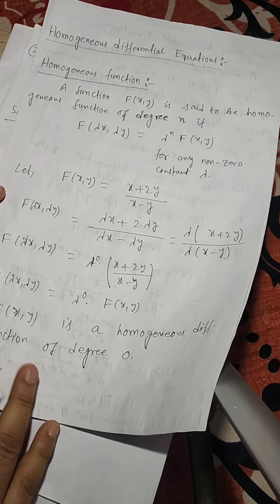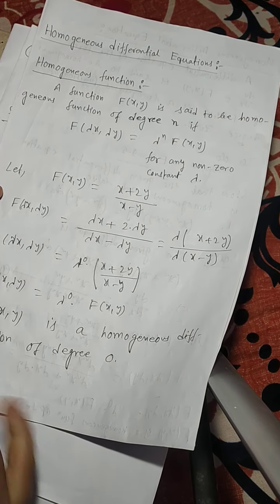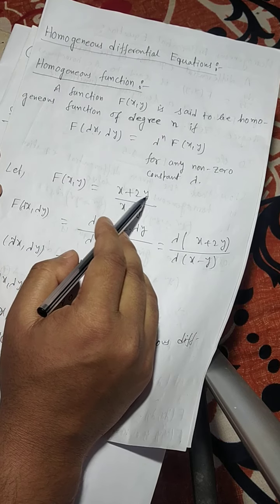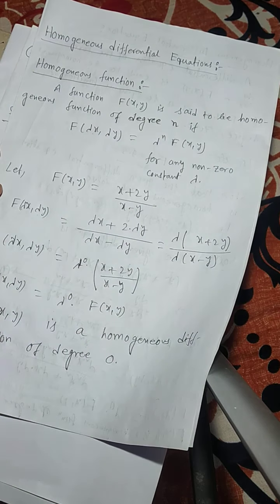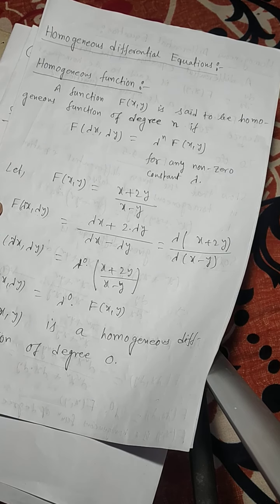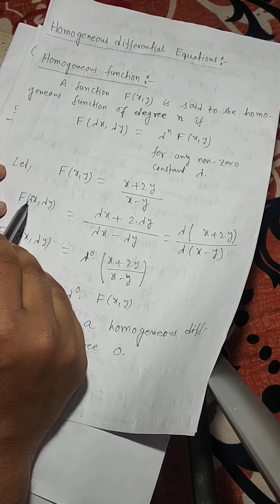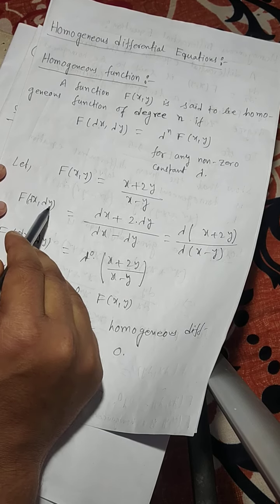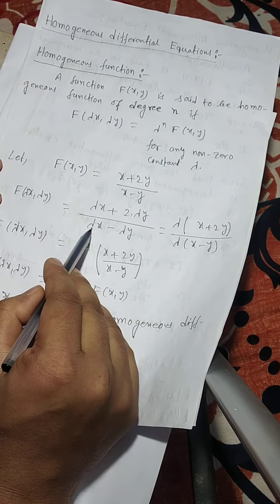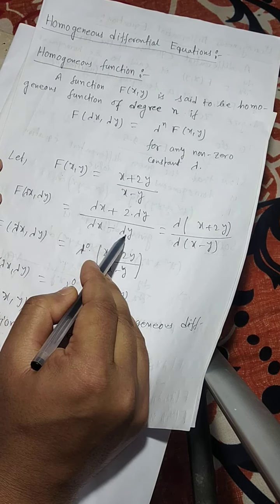Now I will show you how to check a homogeneous function. Let f of x, y equals to (x + 2y) divided by (x − y). Here, x is replaced by lambda x and y is replaced by lambda y. So f of lambda x, lambda y equals to (lambda x + 2·lambda y) divided by (lambda x − lambda y).